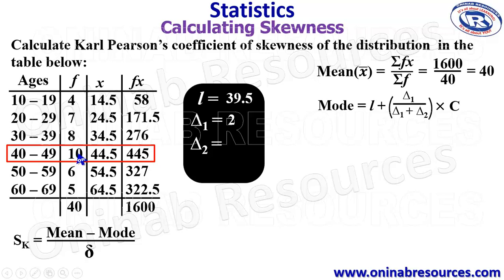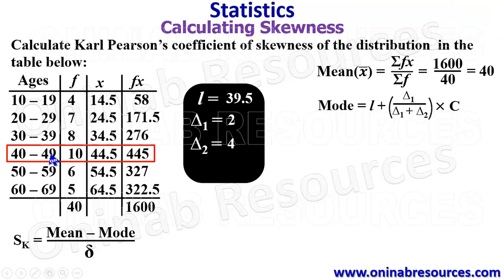For delta 2, it is the difference between the frequency of the modal class and the class after it. The frequency of the class after it is 6, so 10 minus 6 gives 4. For C, that means the class width. To get the class width — how many items we have in this interval — counting inclusively we have 10. The upper class boundary is 49 plus 50 divided by 2, which is 49.5. Subtracting the lower class boundary of 39.5 gives 49.5 minus 39.5, which is 10.